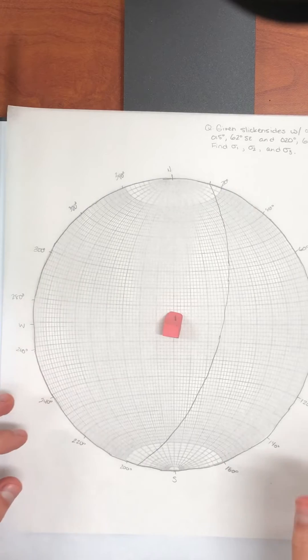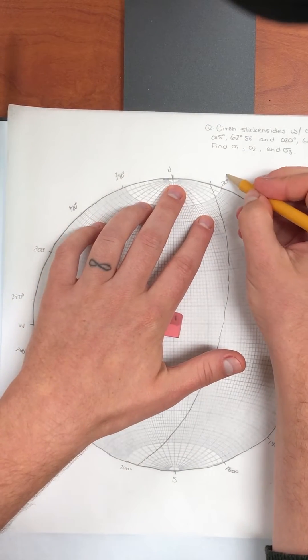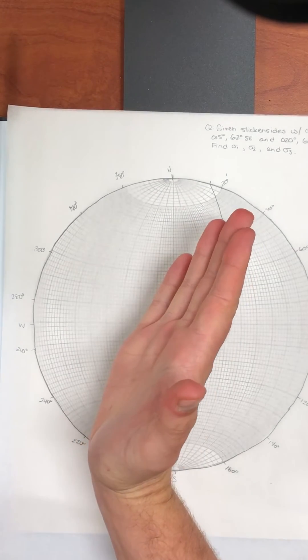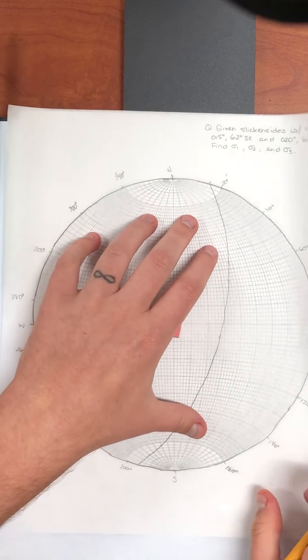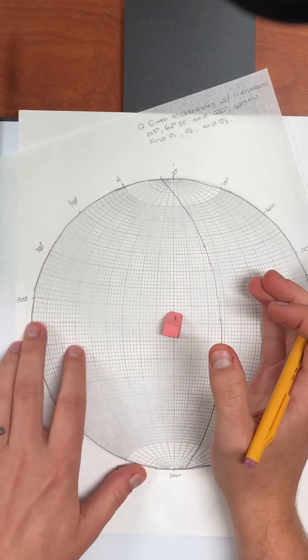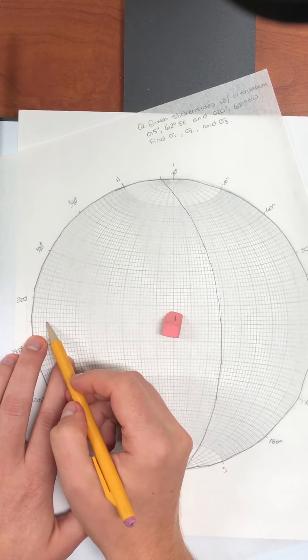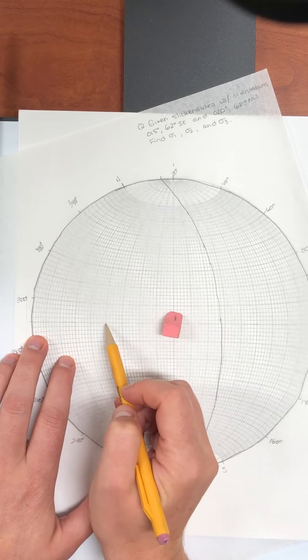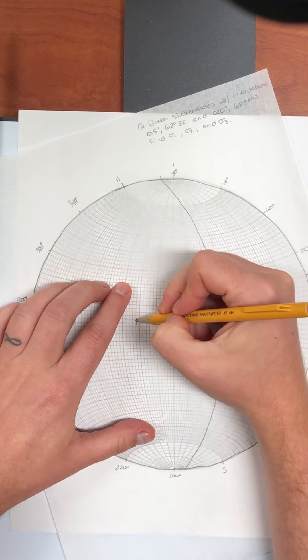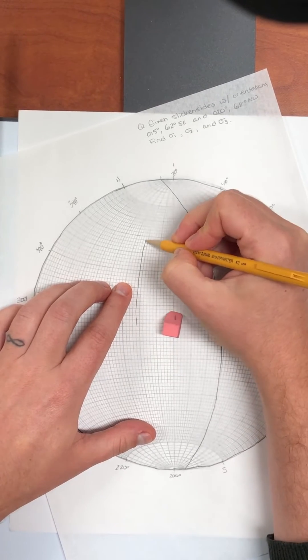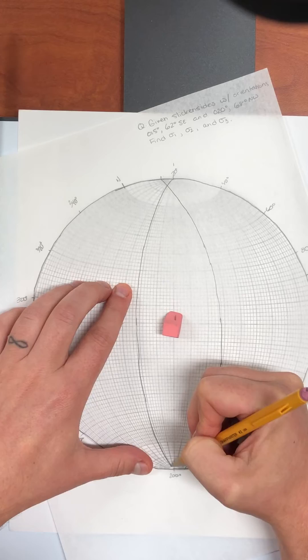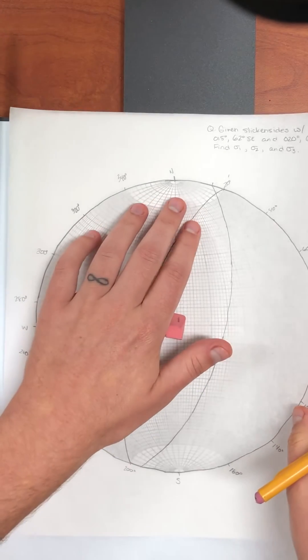It is 20, 68. So I'm going to go over to 20, put a tick mark. And this time we're dealing with a dip to the northwest or a dip going like this. So I'm going to want to count in from the left side. Now rotate over to 20, count in from the left or from the west, 68 degrees. So 10, 20, 30, 40, 50, 60, 68. Draw in that great circle. And rotate it back.